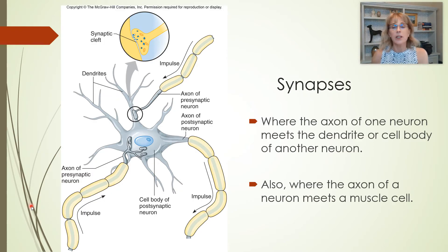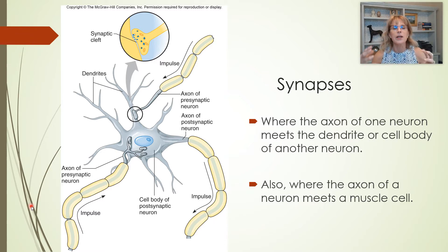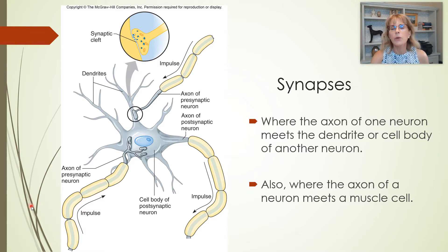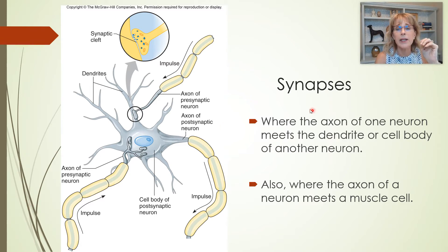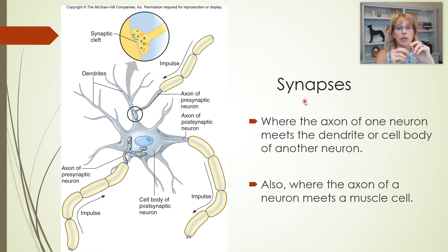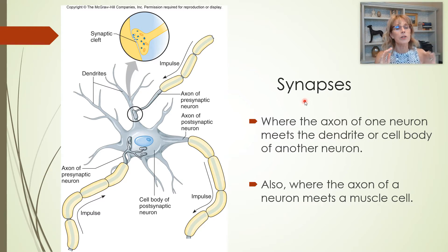Now we need to start thinking about synapses. At the very beginning of this set of lectures, I told you that we have to be thinking about cells — not one neuron at a time, because it doesn't make any sense. One neuron at a time is like one cell phone: it makes no sense. The only time neurons are useful is when they're connected to each other — by synapses. The name of the connection between a nerve cell and a muscle cell is called the neuromuscular junction, but right now we're talking about synapses from one neuron to the next.